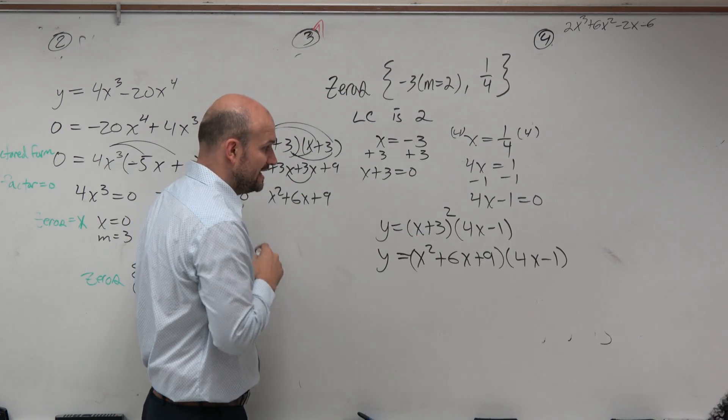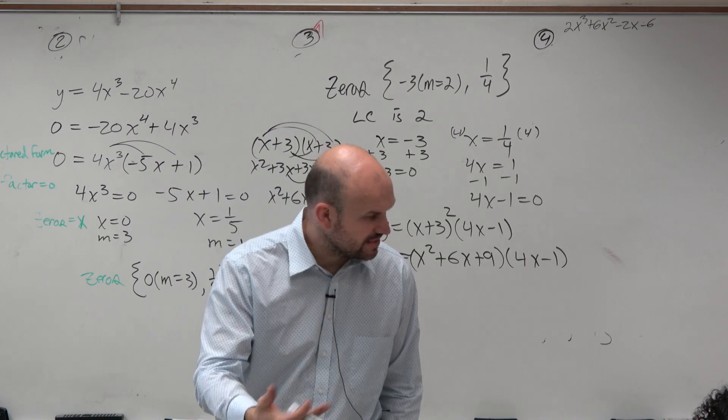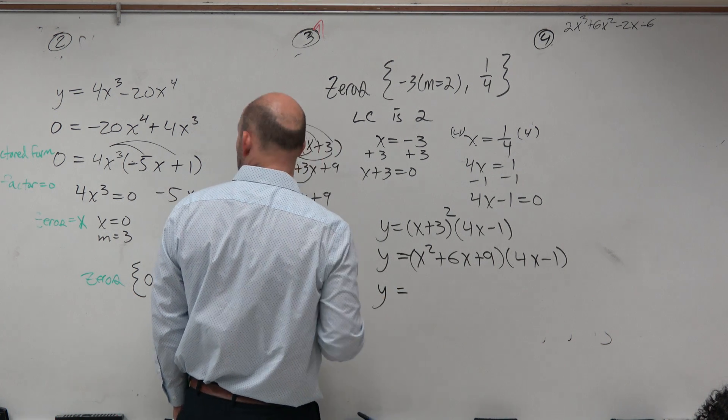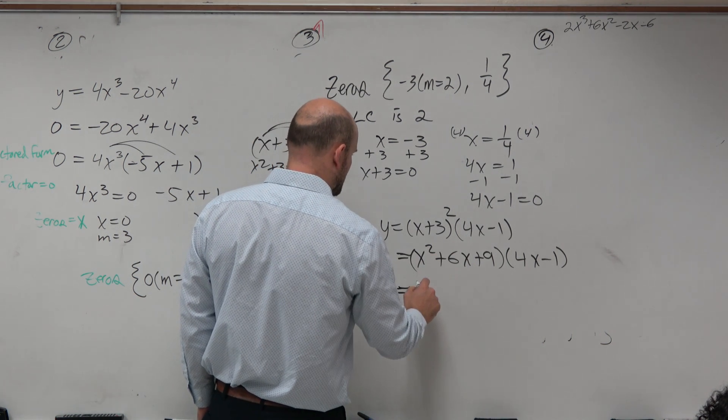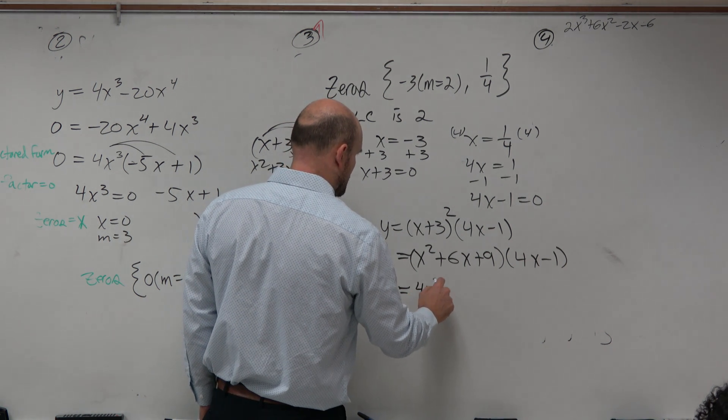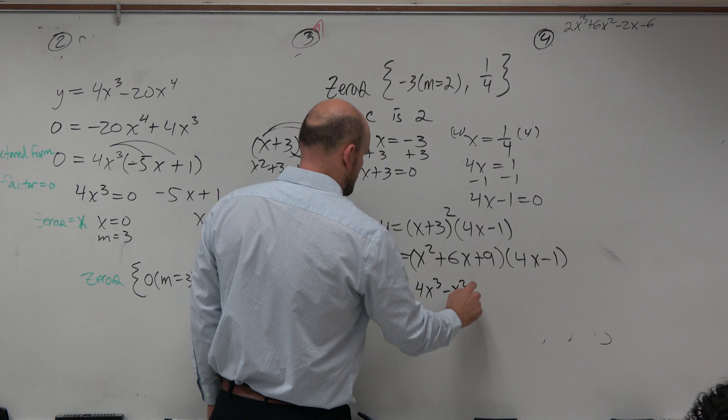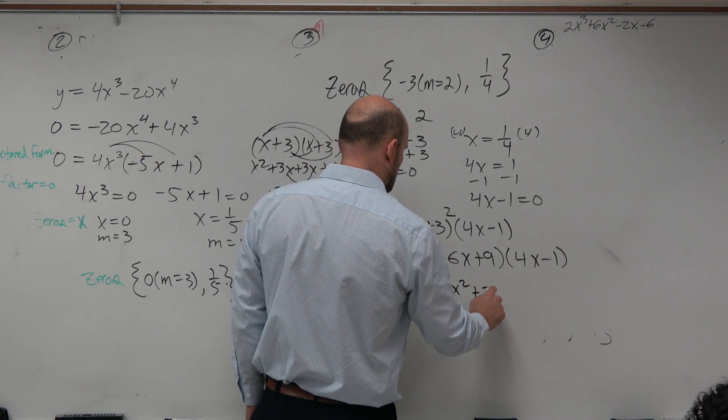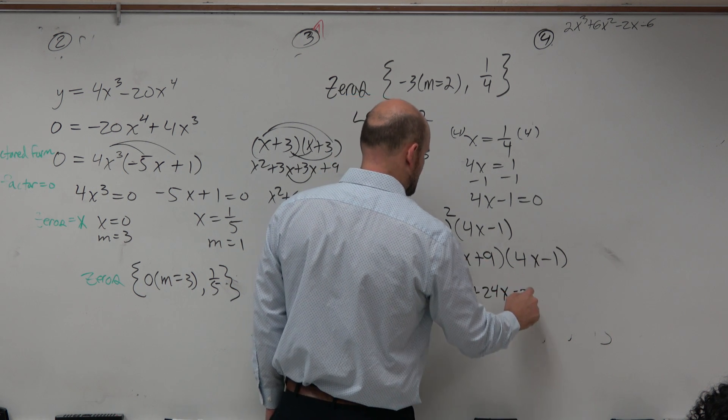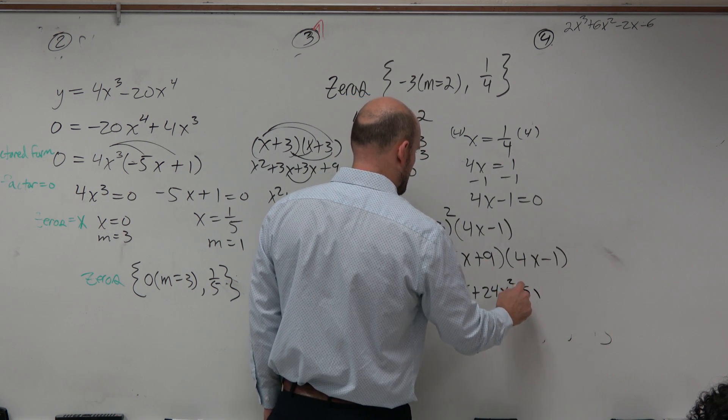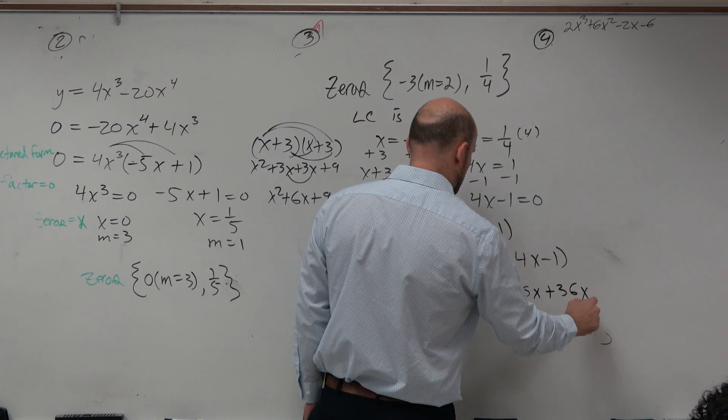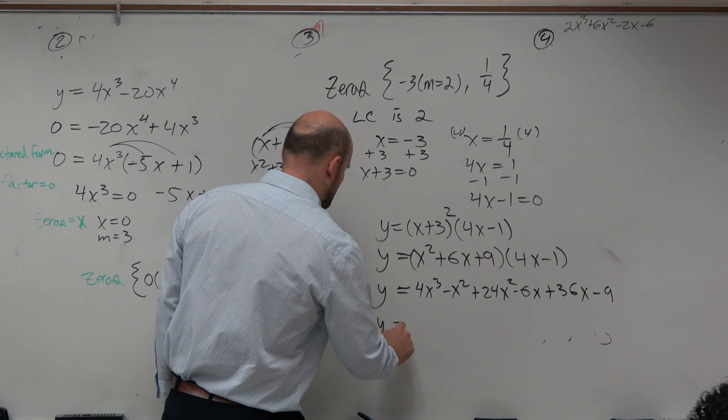Now we need to multiply a trinomial times a binomial. Some of you might want to do box method. Some of you could probably do distributed property. Whatever you really want to do. I'm just going to use, for the sake of time, I'm just going to use a distributed property plus 60, 24x minus 6x. Wait a minute. That's squared.